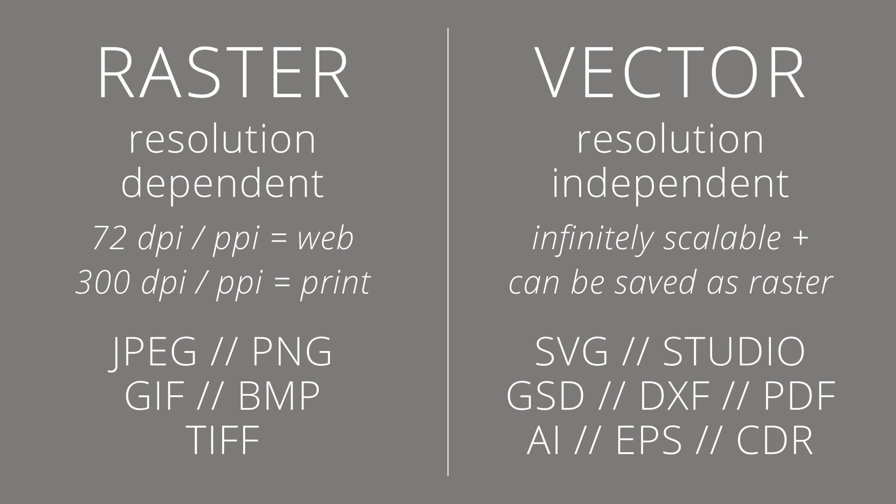Vector files are resolution-independent, so any vector image can be scaled to as small as a postage stamp or as large as a billboard without losing quality. This is what makes them so great for cut files, because the same file you use to create a small paper embellishment for a card can also be scaled up, cut from vinyl, and used to make a sign or wall art. You can also save a vector as a raster file — for example, you can save an SVG as a PNG or JPEG — but the resulting file will be resolution-dependent and won't scale larger without losing quality. Raster files, on the other hand, cannot be saved as true vector files; they can be embedded in vector files, but they won't actually be vector files.